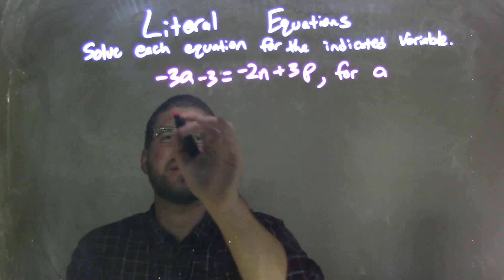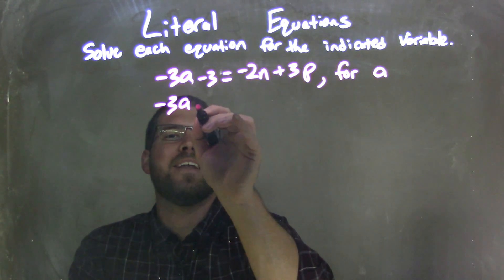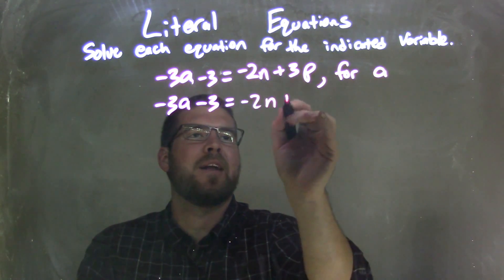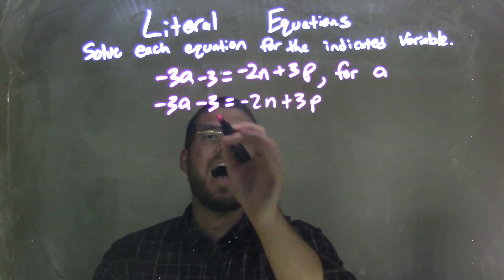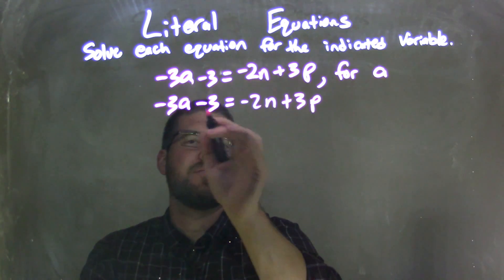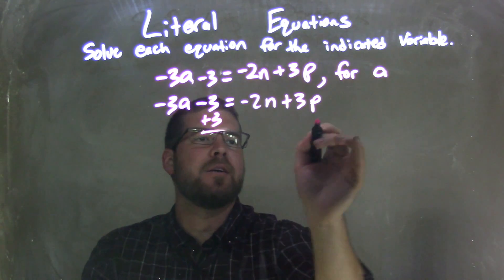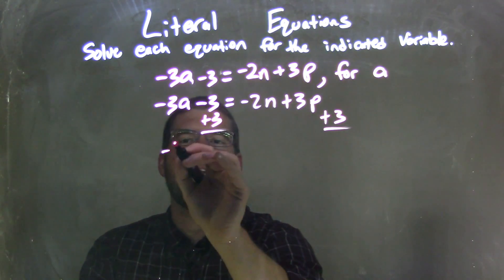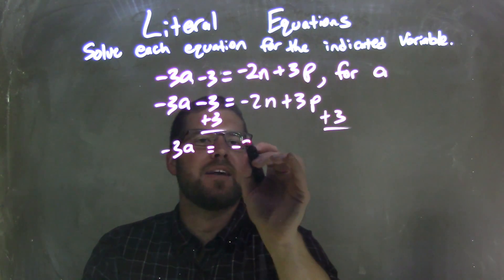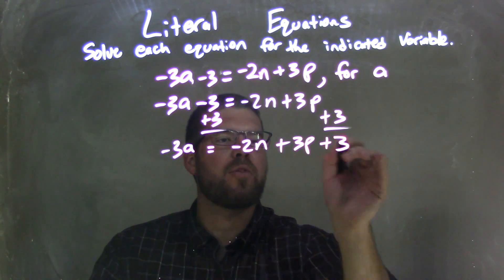So the first thing is I'm going to rewrite my equation here. Negative 3a minus 3, don't forget that, equals negative 2n plus 3p. I'm going to add a 3 to both sides and try to get a by itself. So I'm going to add a 3 here to both sides, and that leaves me with negative 3a equals negative 2n plus 3p plus 3.